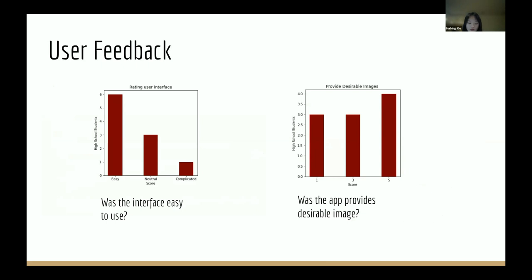In the feedback, we also asked the students to rate our application to observe if the app provides the desirable images or not. They could choose between one to five. One means that it does not fulfill their expectation. Five means that the app provides their desirable images. The results show us that three students rated one, three students rated three, and four rated five.